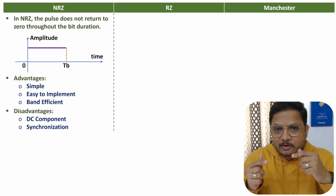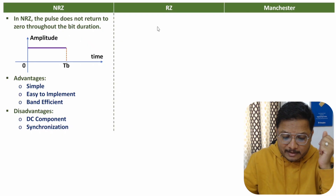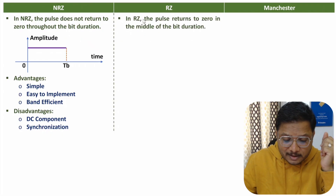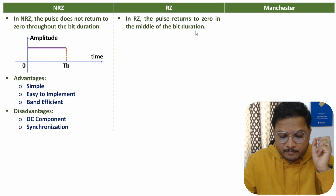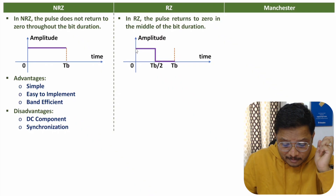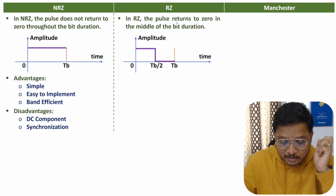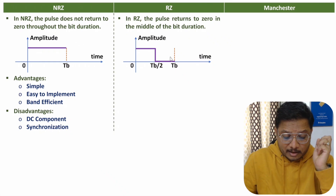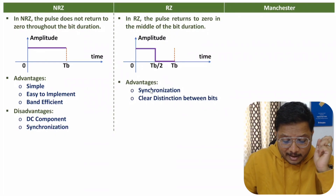Now let me discuss RZ, that is Return to Zero. In Return to Zero, the pulse returns to zero in the middle of the bit duration. Looking at the waveform — we have time from the 0th instant, Tb/2 in the middle, and Tb at the end — the pulse goes to zero at the Tb/2 instant, so the pulse returns to zero in the middle of the bit duration.